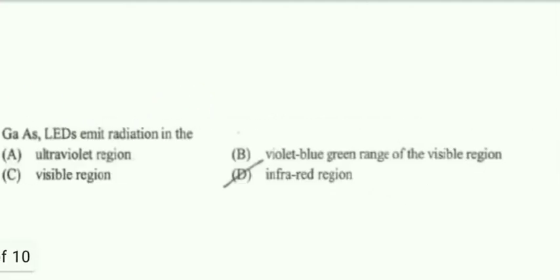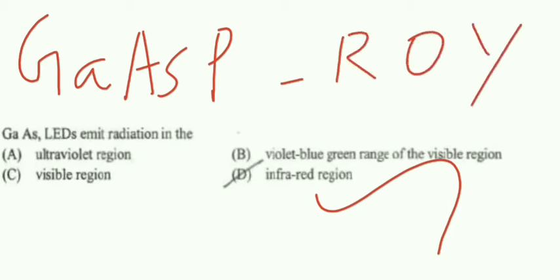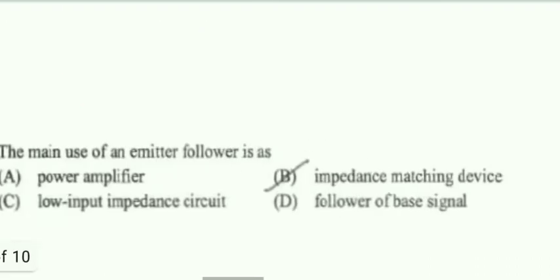Next one: gallium arsenide LED emits radiation in the? This is also a very important question in every exam they are asking this question. The option is infrared. So gallium arsenide LED emits radiation in infrared, whereas gallium arsenide phosphide emits radiation in red, orange, yellow. So it is visible range. If you want visible range LED, we have to use gallium arsenide phosphide which will emit out of these three colors.